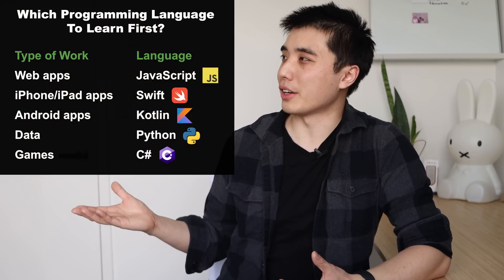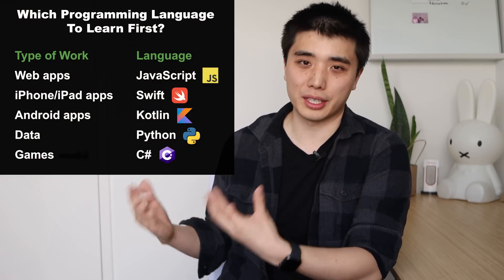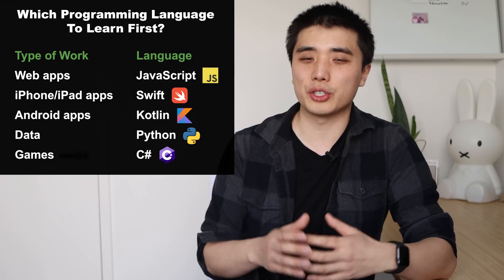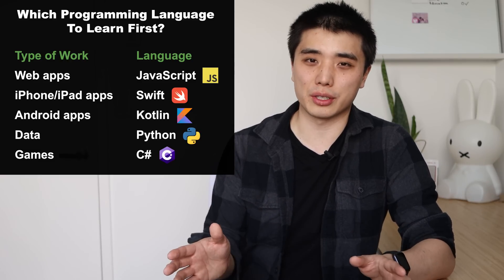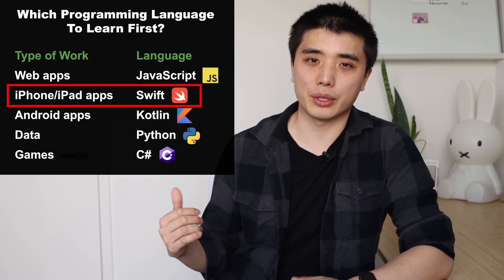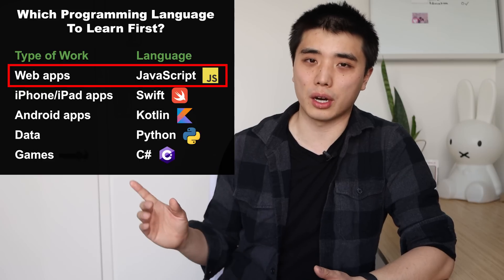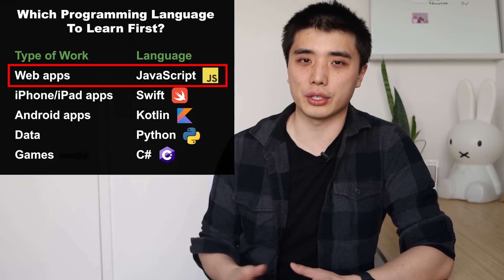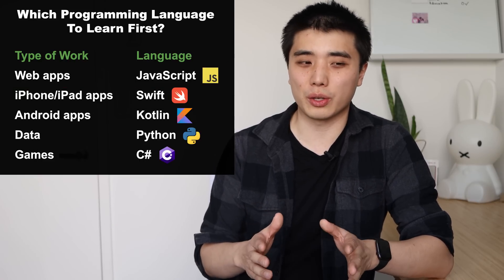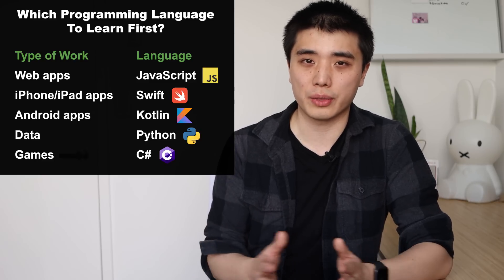So here's the answer right here, organized into a simple table. When it comes to choosing your programming language, you actually don't have many choices. For example, if you want to work on iPhone and iPad apps, you have to learn Swift. If you want to work on web applications, you have to learn JavaScript. So you're really choosing what kind of apps you want to build or what kind of work you want to do.